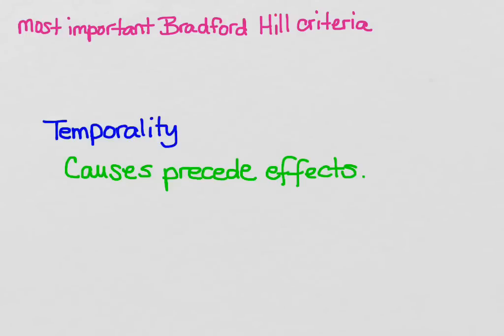The next causal criterion that's really important is temporality — causes precede effects. If you have an exposure and you know it came before the disease, that's better evidence for a causal relationship. This is one reason why a cross-sectional study doesn't provide great evidence for a causal relationship, because you're only looking at causes and effects at a single time point, so you don't know which one came first.